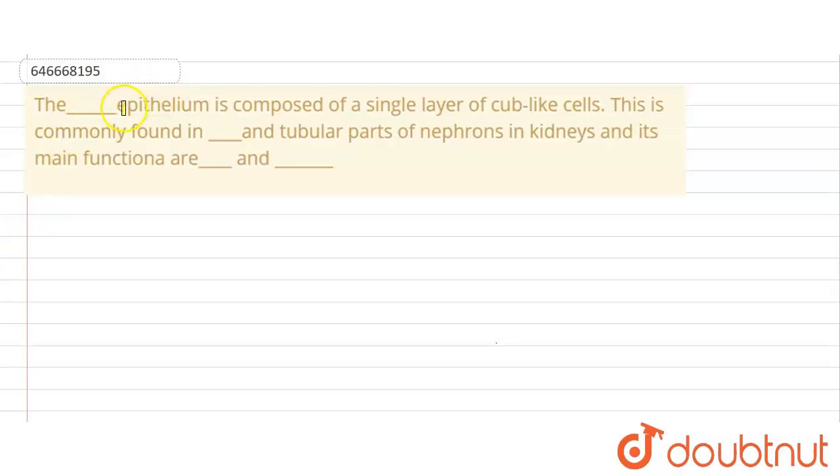Hello everyone, so here's the question. The dash epithelium is composed of a single layer of cube-like cells. This is commonly found in dash and tubular parts of nephrons in kidneys and its main functions are dash and dash.